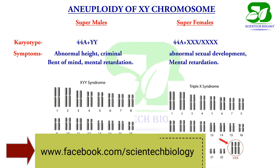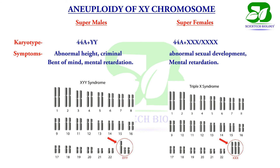Due to an extra Y chromosome, the karyotype becomes XYY and this condition is called Superman. The affected male has a criminal bent of mind. Similarly, an extra X chromosome in females is responsible for causing the Super Female, where the karyotype becomes triple X or tetra X — that is, the chromosome count becomes 47, 48, or even 49. Abnormal sexual development and mental retardation are some common symptoms of this disorder.